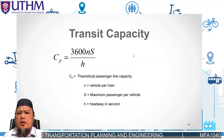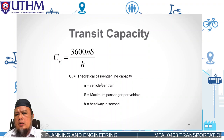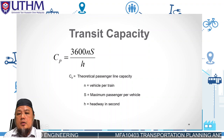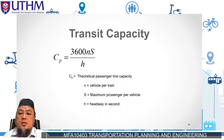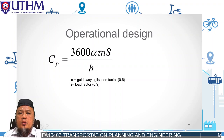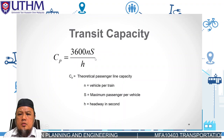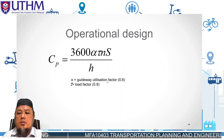To calculate or evaluate transit capacity, we use the formula CPS (passenger capacity) = 3600 divided by headway, multiplied by number of trains and maximum passengers per vehicle. For operational design, we incorporate a utilization factor and load factor as additional constants into the formula.